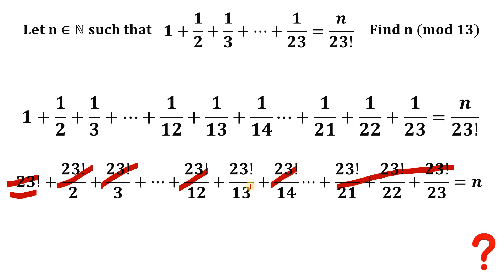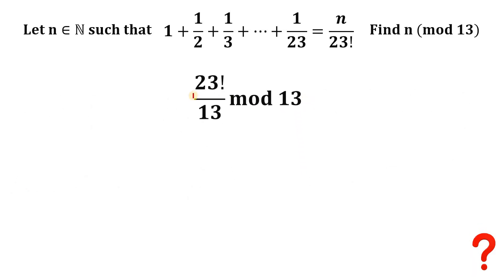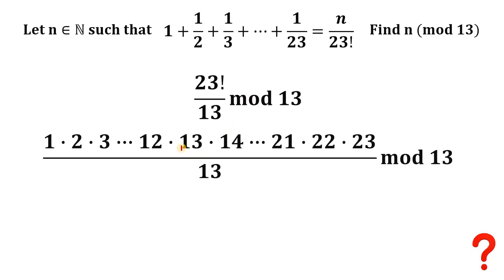This equation reduces to 23 factorial over 13, mod 13. So our goal is now to find the remainder when 23 factorial over 13 is divided by 13. Let's expand 23 factorial. As you can see, we can eliminate the 13 in the numerator and the 13 in the denominator, so this number is no longer a multiple of 13.